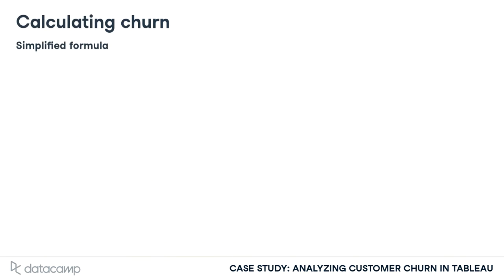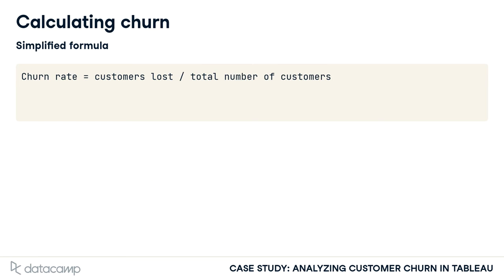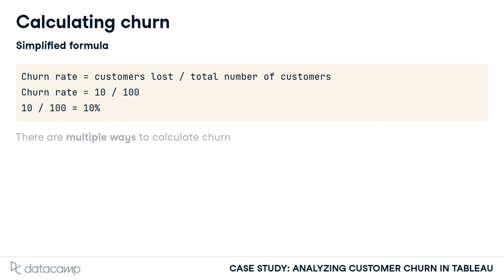The simplified formula for churn is to divide customers lost by total number of customers. If we have a total of 100 customers in a certain period and 10 end up leaving, we have a churn rate of 10%. There are multiple methods to calculate churn, and depending on the industry, it might make sense for a company to slightly alter the formula.